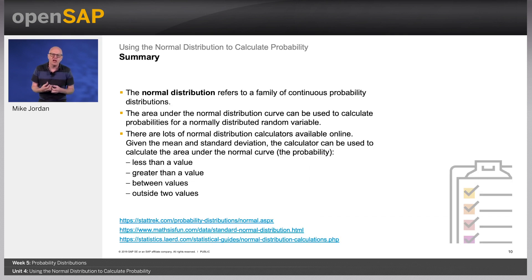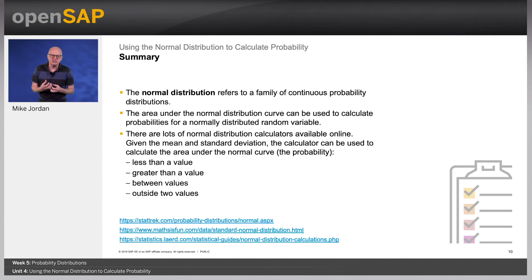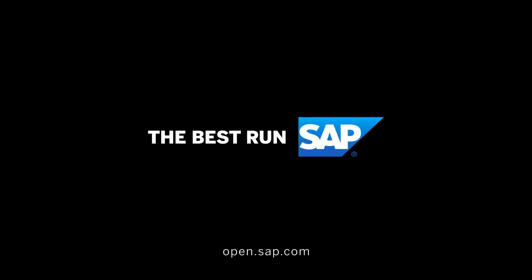To summarise: the normal distribution refers to a family of continuous probability distributions. The area under the normal distribution curve can be used to calculate probabilities for a normally distributed random variable. There are lots of normal distribution calculators available. Given the mean and the standard deviation, the calculator can be used to calculate the area under the normal curve — the probability — less than a value, greater than a value, between values, or outside two values. In the next unit, we will consider hypothesis testing in more detail. Thanks for watching and see you next time.